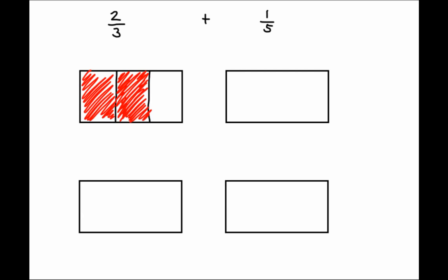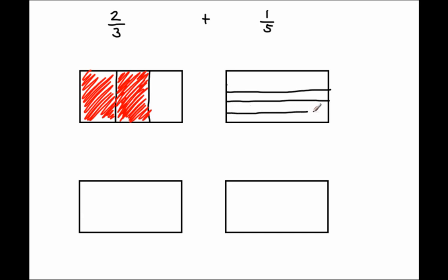I've shaded in 2 thirds. Now I'm going to partition this whole for 1 fifth into 5 equal pieces. But I'm not going to partition vertically — that means up and down. I'm going to partition the second fraction horizontally, and you'll see why in a second. I'll partition this whole into 5 equal pieces and shade in 1 of them, representing 1 of the 5 equal pieces.